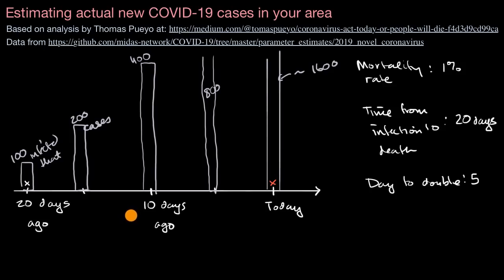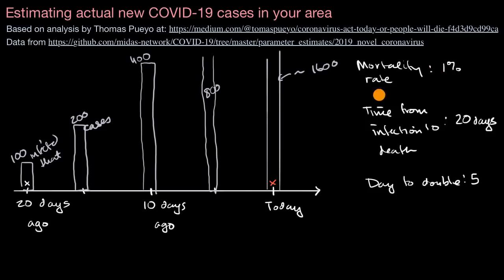For example, in my county — Santa Clara County in California — we just had our second death reported yesterday, and there was another death five days before that. There are only under 100 reported cases in my county, but based on this analysis, the actual number of infected persons is likely to be at least a factor of 10 more than that, and could be as high as 1,000, 2,000, or 3,000 people. We won't know for sure until we can do the type of hindsight analysis that the Chinese had, but this is just to remind us how serious the situation actually is.